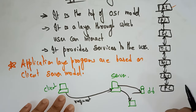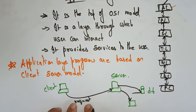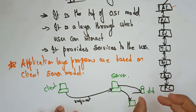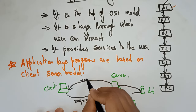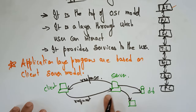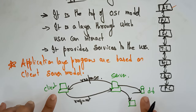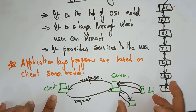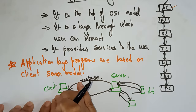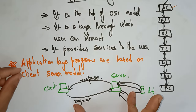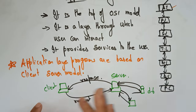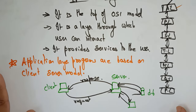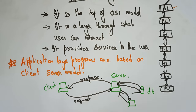The server sends a request to the database and to the applications. When the data is present in the database, the server gives a response to the client based on the information it checked in the database as well as the required applications. The server sends the information back to the client. This is the client-server model — the application layer programs are all based on this. One system connects to another system using the IP address of the server.